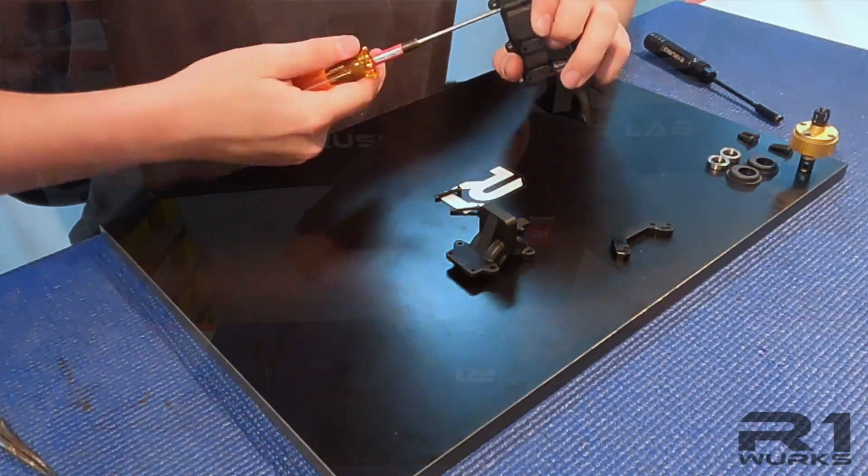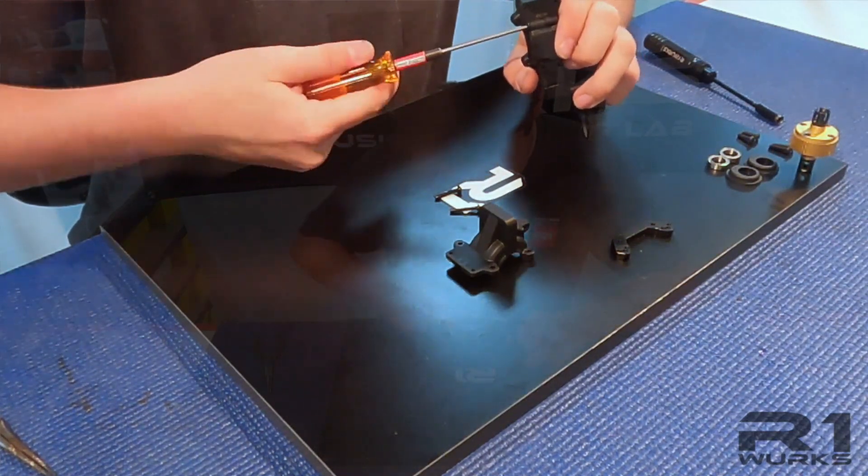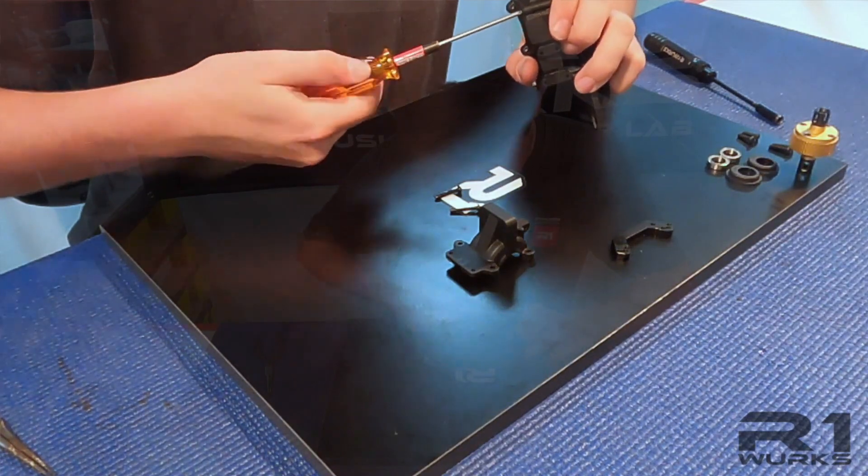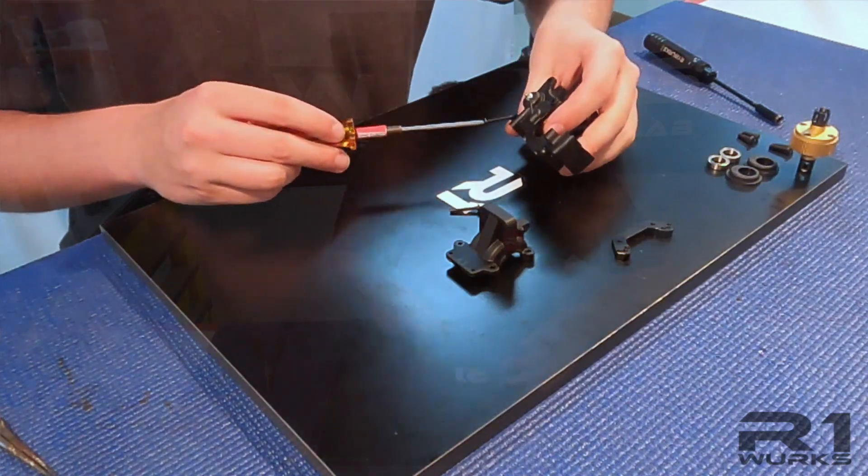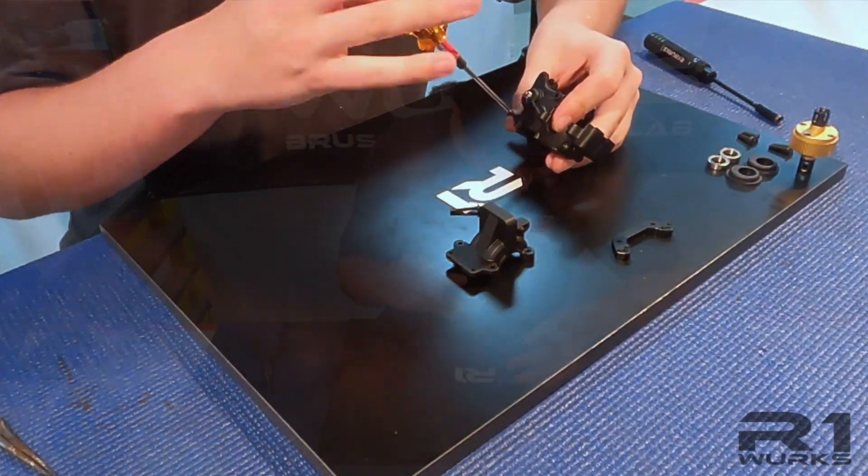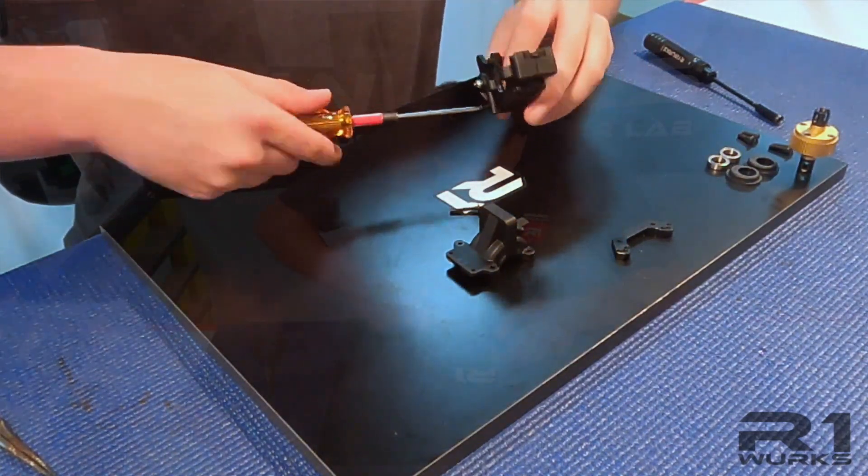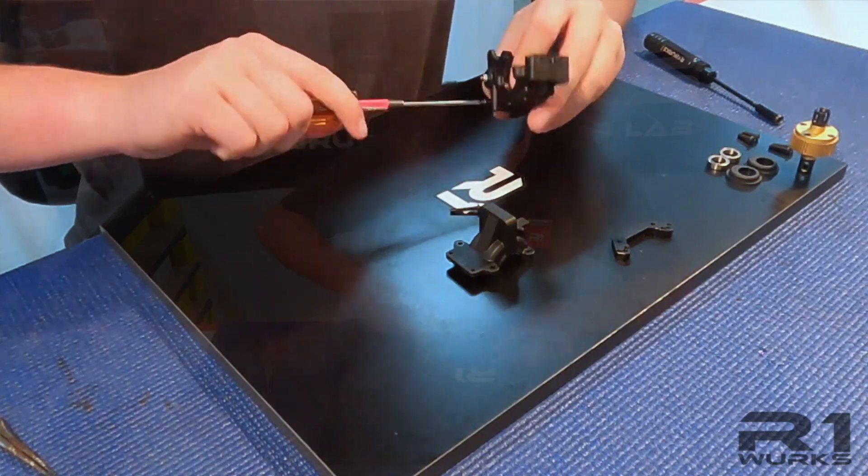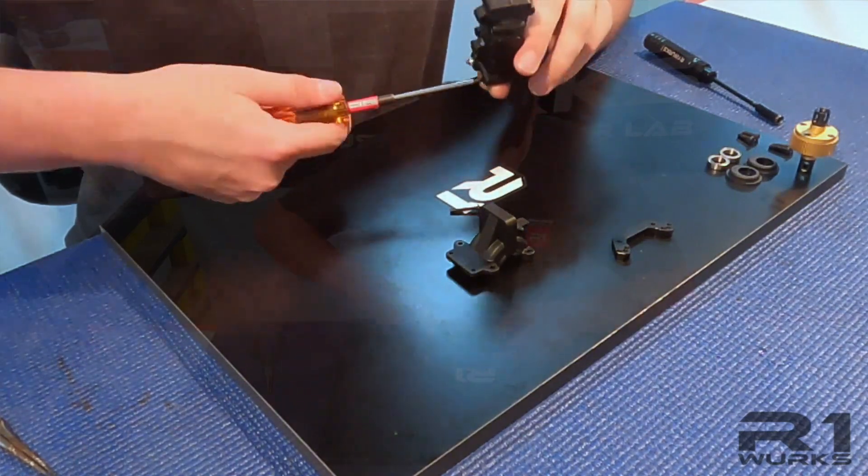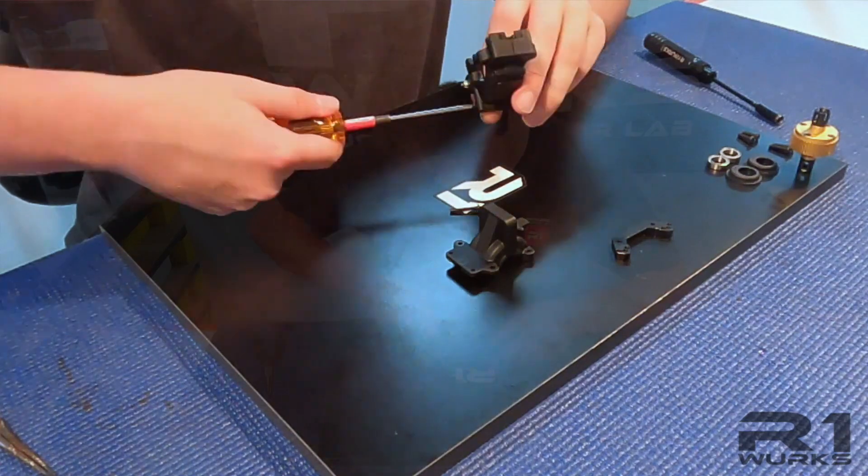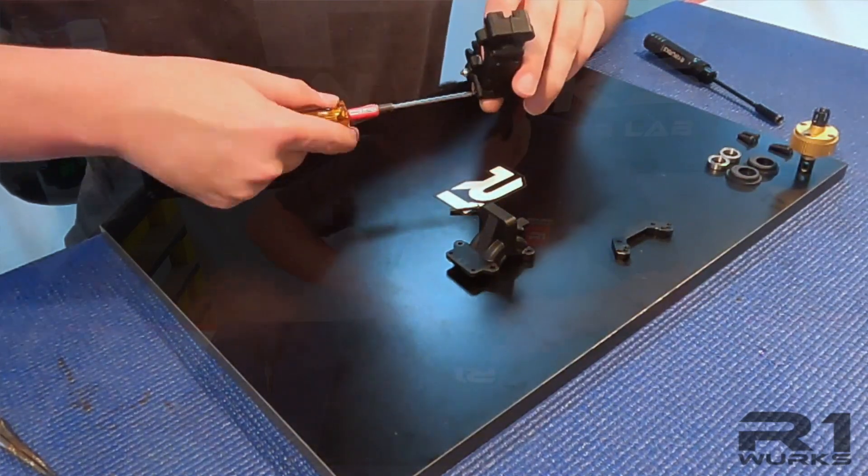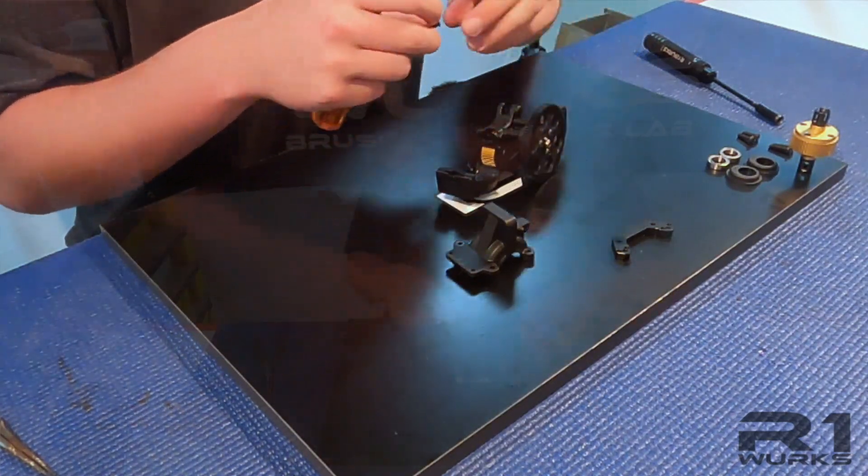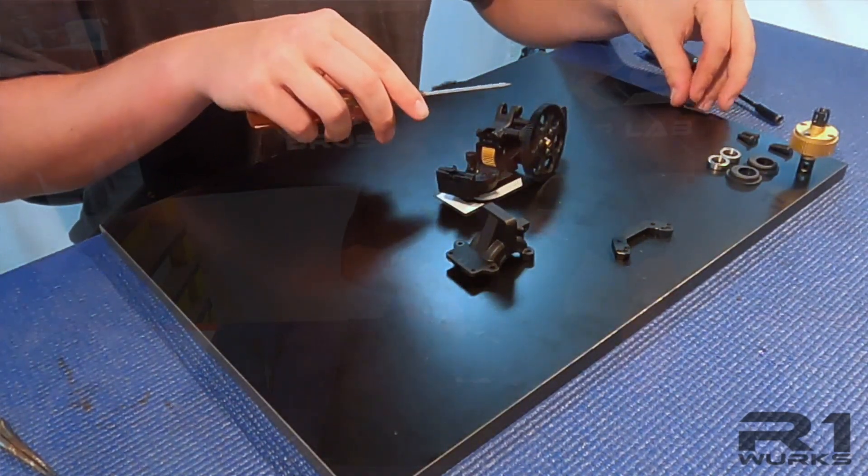Just go to where it bottoms and then just back it off just a little bit. A quarter turn is ideal. And for now we are going to leave the third one out that goes here.